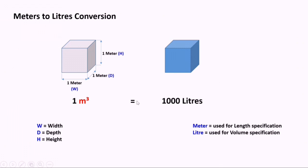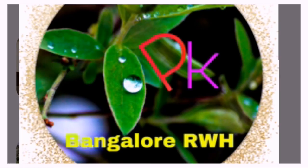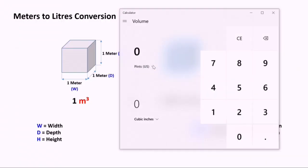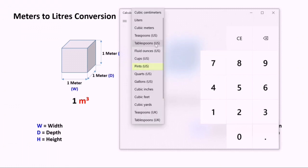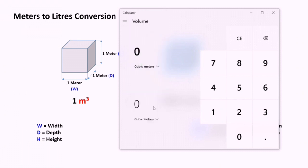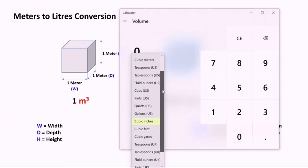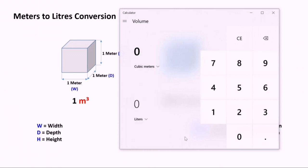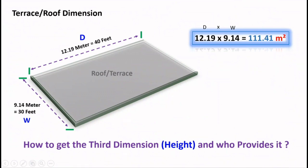So let me open a calculator. You go and select the volume here. What I will do is I will take input as cubic meter and output as liters. I'll put one cubic meter here. Now you can see it is equal to thousand liters.